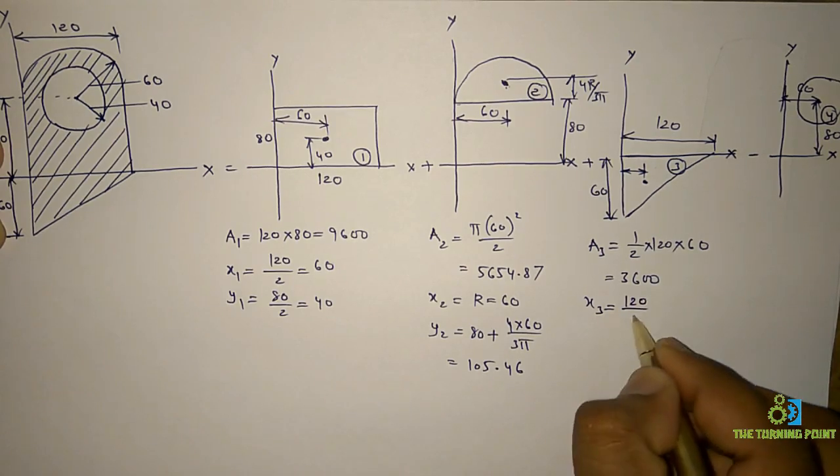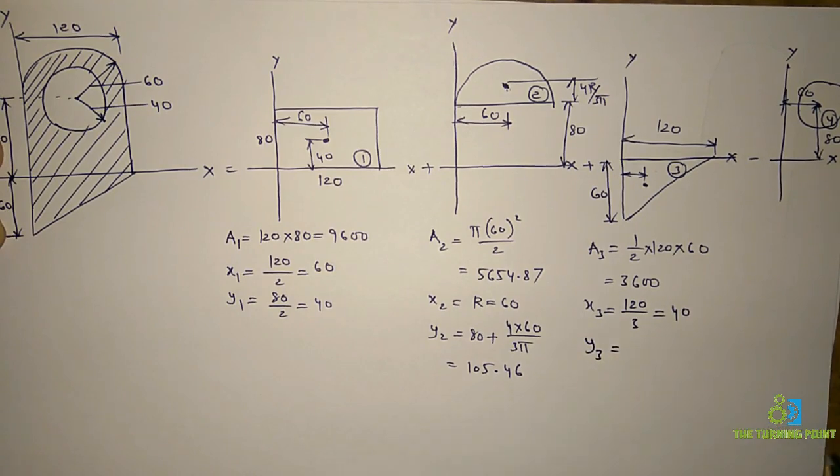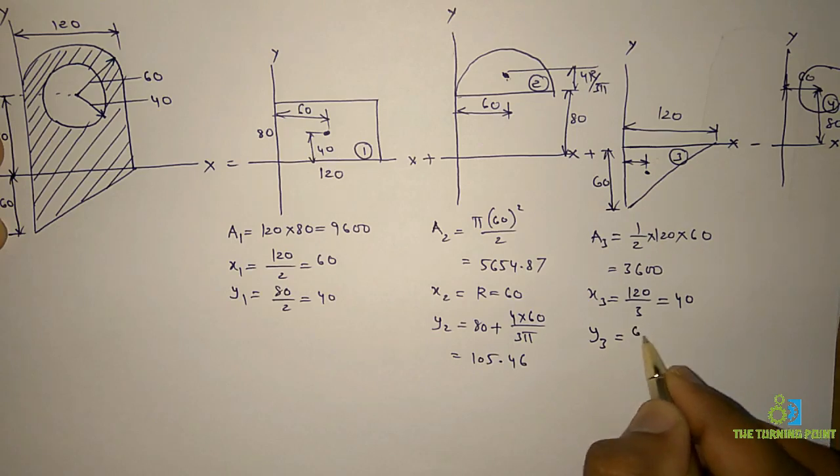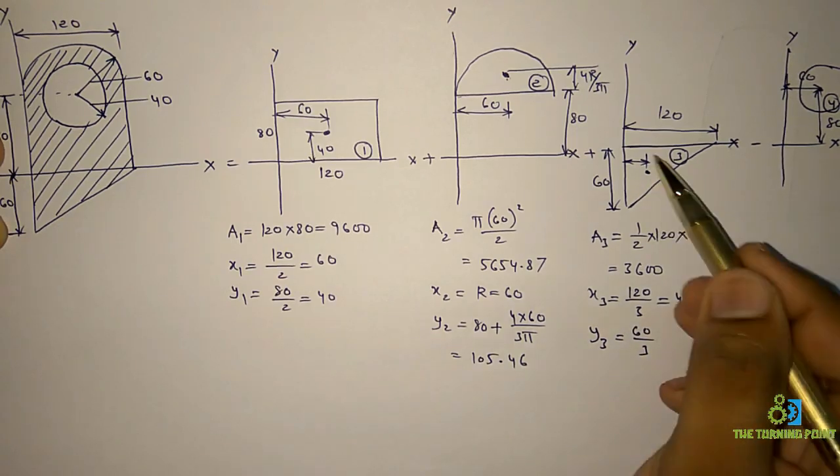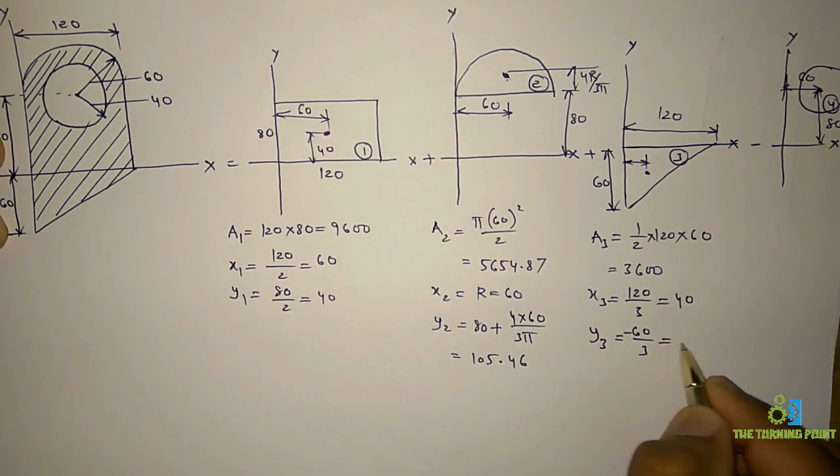y3 is height divided by 3, so 60 divided by 3 equals 20. But since it's below the axis, it's negative, so y3 equals minus 20.